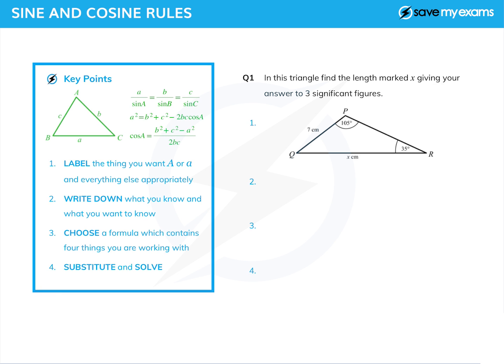Let's just make sure we are dealing with the right thing. If you've got a right angle anywhere in your triangle, go and use SOHCAHTOA. Or if you're not using any angle apart from the right angle, go and use Pythagoras' theorem.